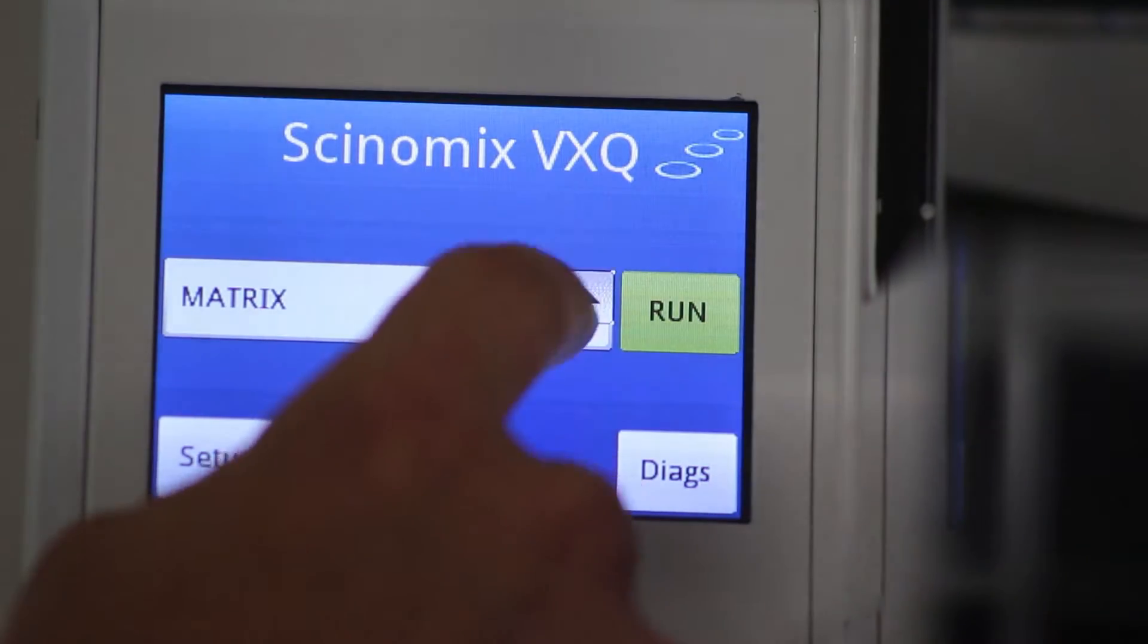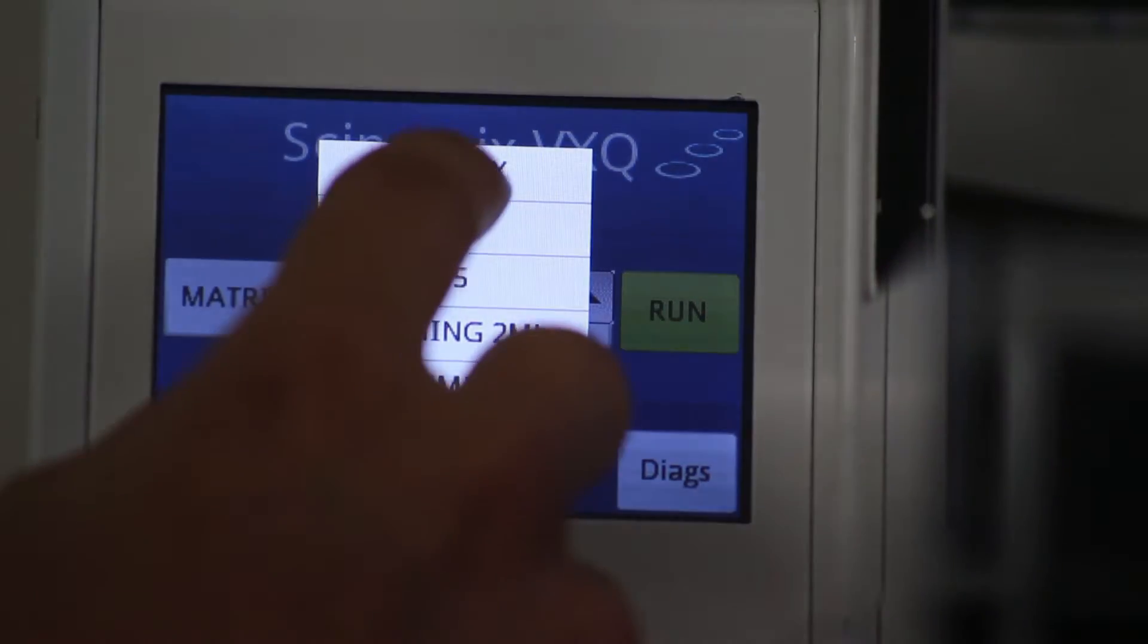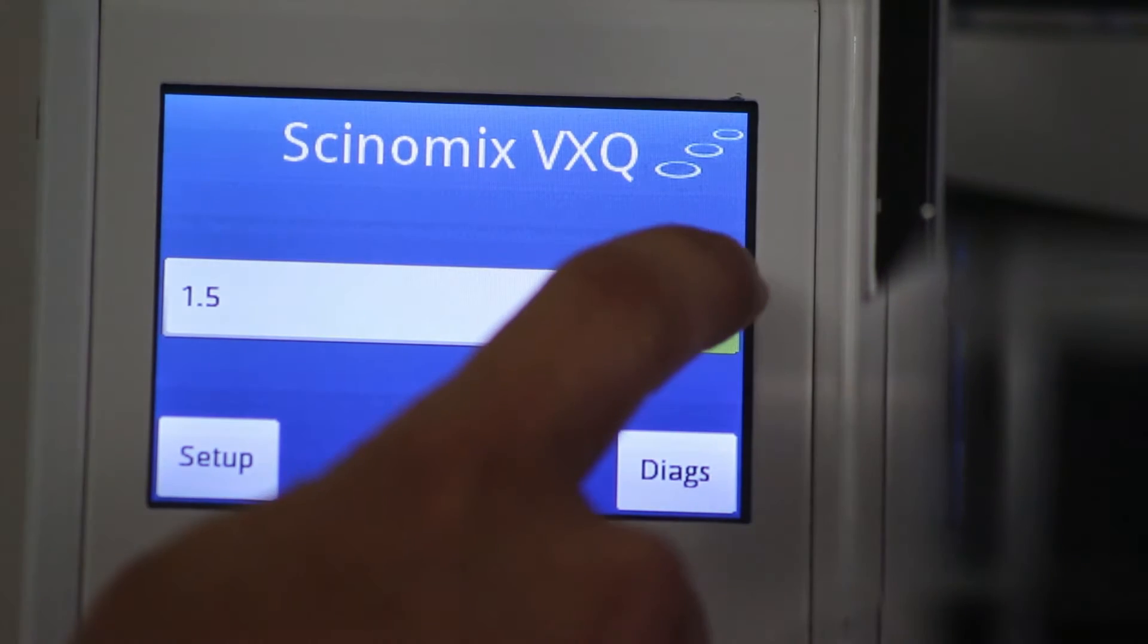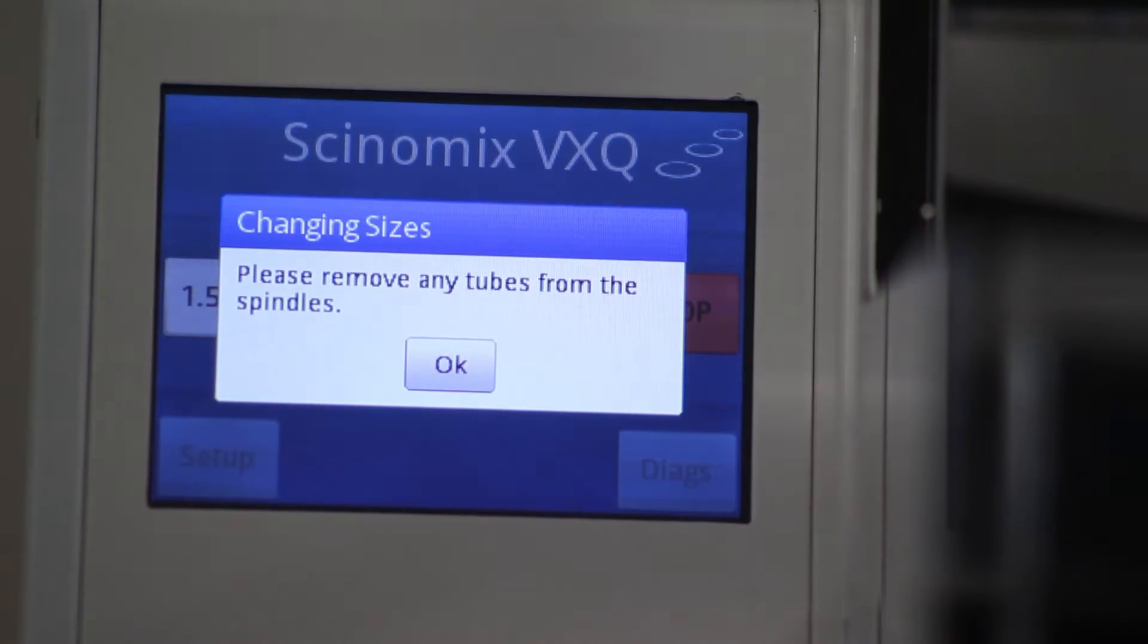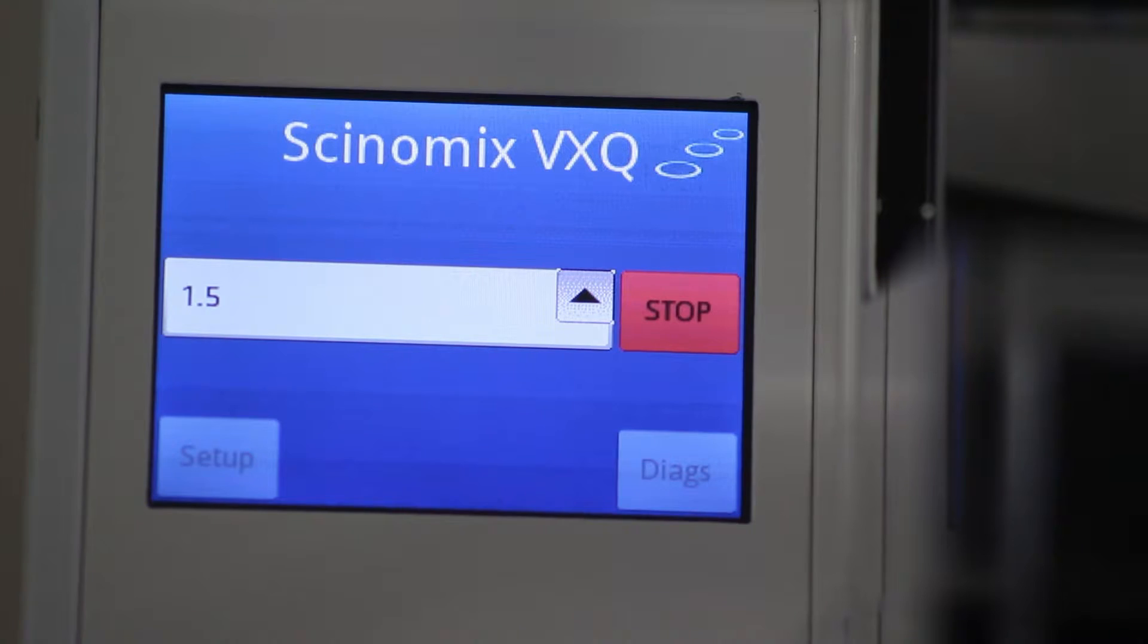The touch screen located on the front of the system allows the user to easily configure settings. These settings can then be saved to the system and recalled for later use. This flexible design allows the user to easily change between tube types with the touch of a button.